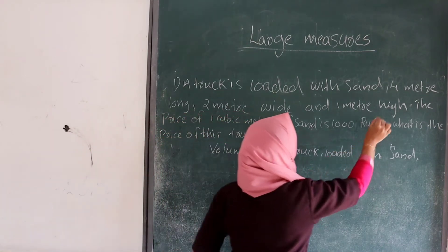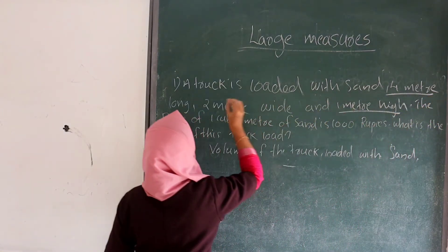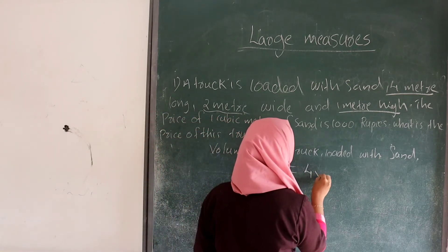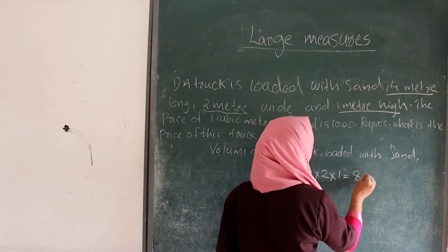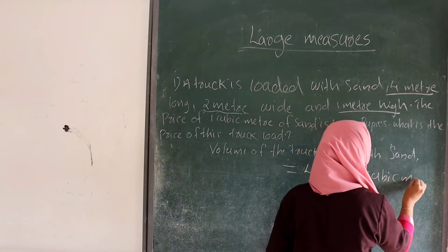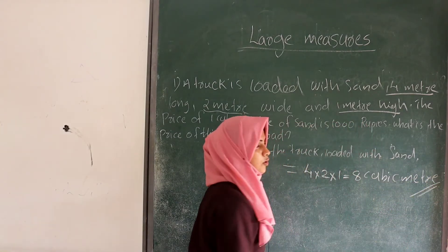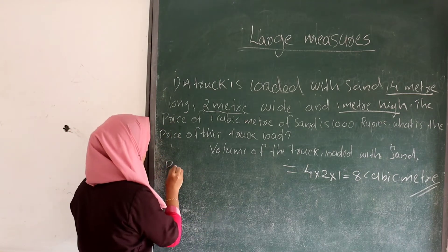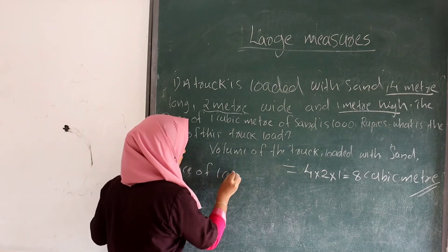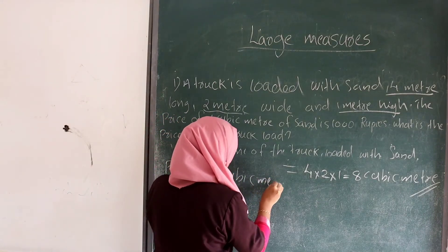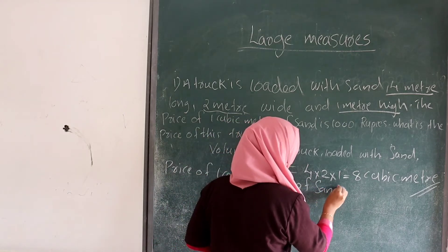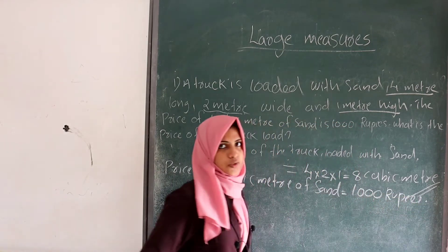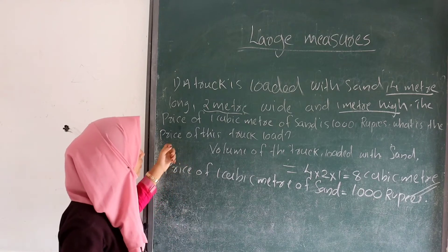The length, width, and height are given. Using these, we find the volume: 4 × 2 × 1 = 8 cubic meters. The price of 1 cubic meter of sand is 1000 rupees. The question is: what is the price of this truck load?